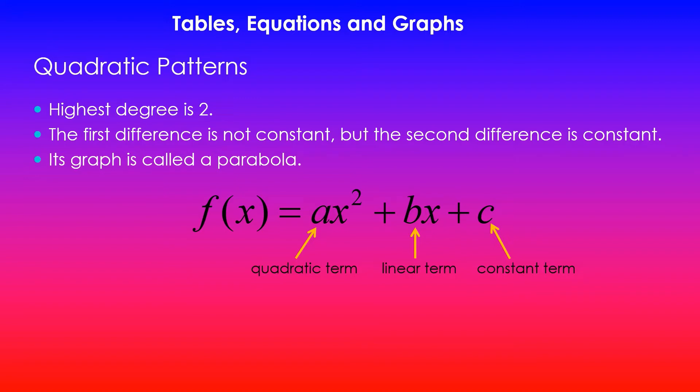But if it is not constant, then you move on and find the second difference and see if it is constant. If the second difference is constant, then the pattern that you're looking at is a quadratic pattern. And the graph of this pattern is called a parabola.